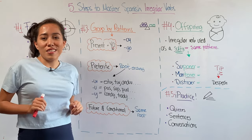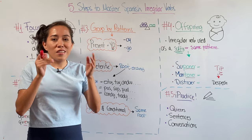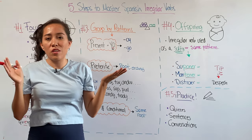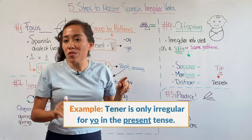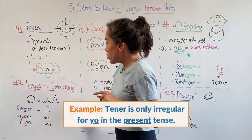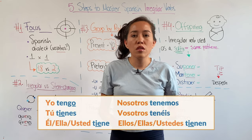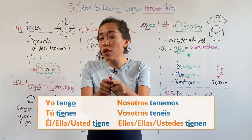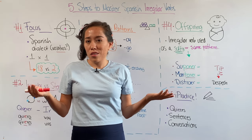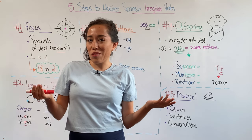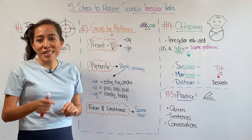Let's take tener as an example. Everybody learns tener and they are like, oh my god, it's irregular. No — it's irregular for yo: yo tengo. But for the other subjects, it's going to be a stem-changing verb. Yo tengo, tú tienes, ella tiene, nosotros tenemos. Not so scary, right?